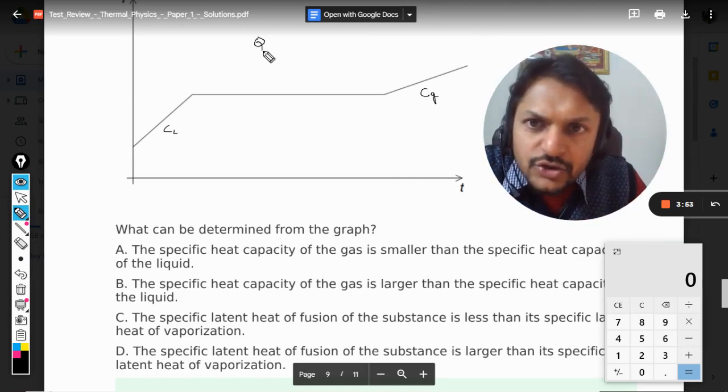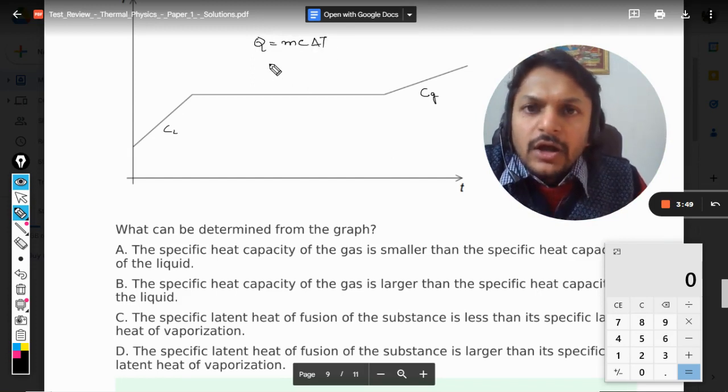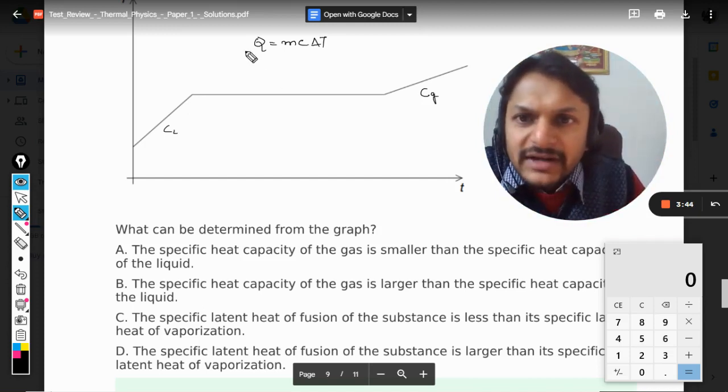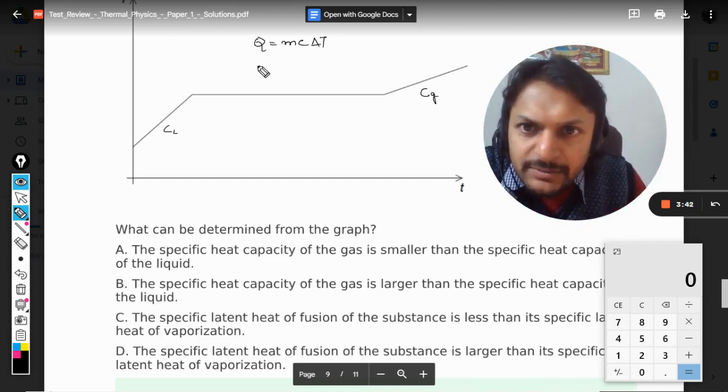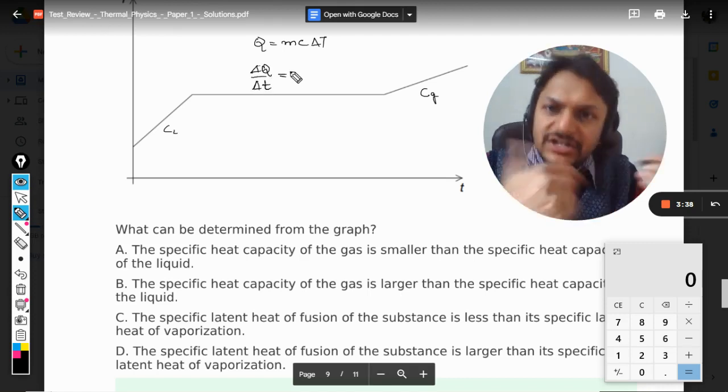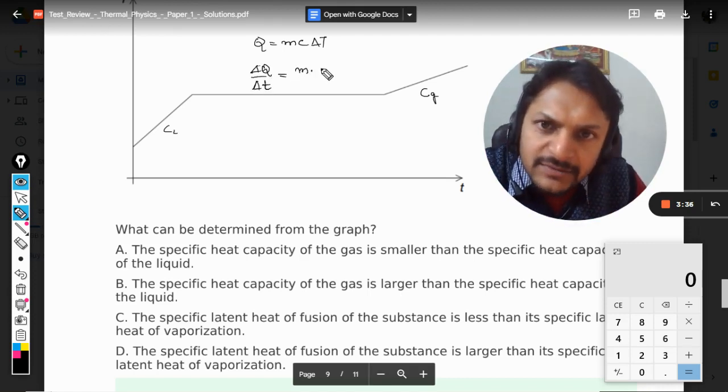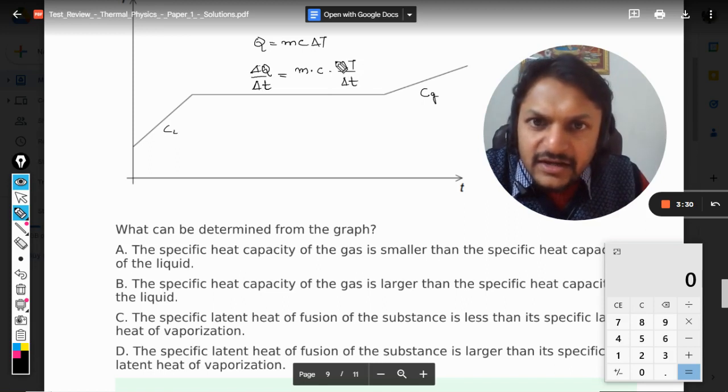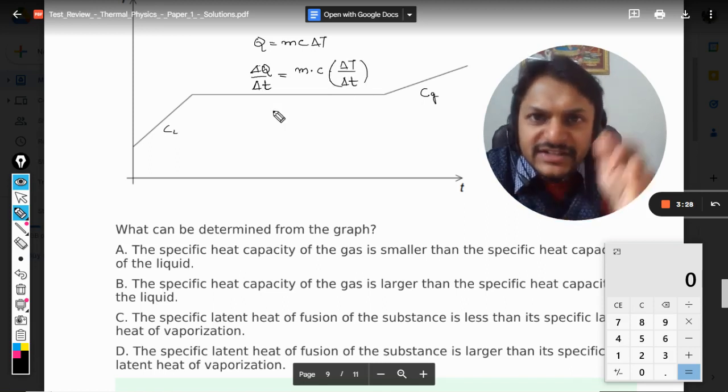So Q equals mc delta T. Now we are talking about the power, the rate at which heat was supplied, so we need to divide this equation by delta t. So it will be delta Q divided by delta t. This is the rate at which heat is supplied. It becomes m into c into delta T by delta t. So this is the gradient of this graph, it is the slope of the graph.